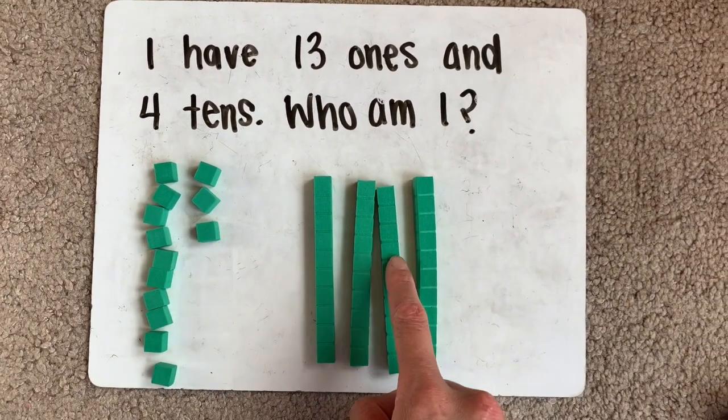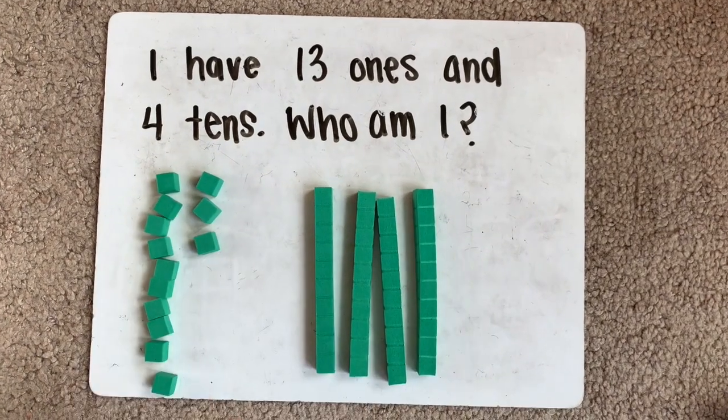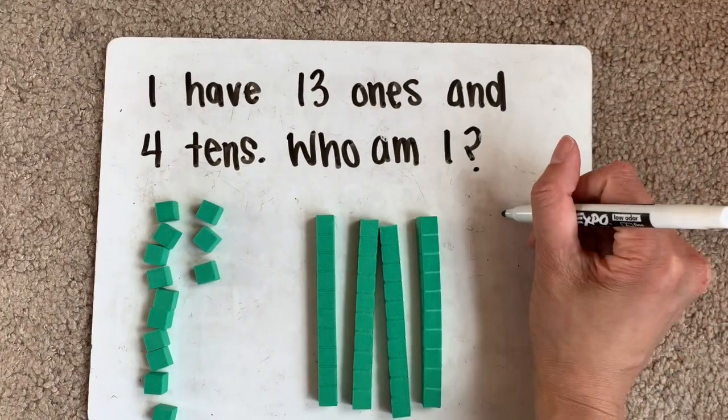1, 2, 3, 4, 5 tens. And 1, 2, 3 more. 5 tens and 3 more is the same as 53.